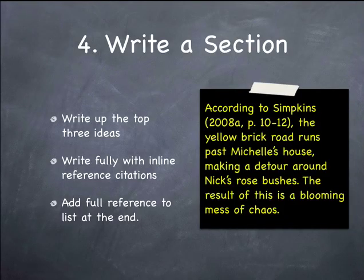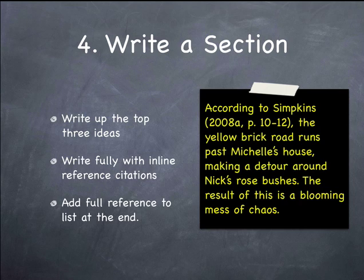The next step is to actually write a section. I've suggested here that you write up the top three ideas. Depending on the section, it might be three ideas, four ideas, or two ideas — it depends how verbose you end up being or how many ideas you come up with. The idea is to look at the number of marks available and the number of words you have, and discuss relatively fully the major important ideas that need to fit in there.